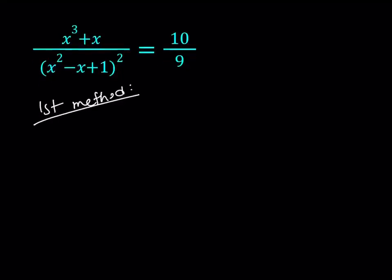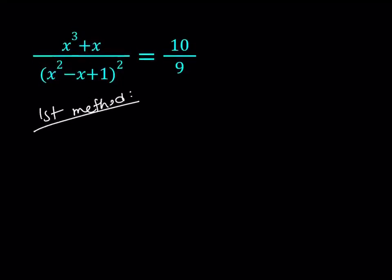My first method is going to involve a little bit of brute force. So, I'm going to use cross multiplication. That's going to give me 9x cubed plus 9x equals 10 times the quantity x squared minus x plus 1 squared.